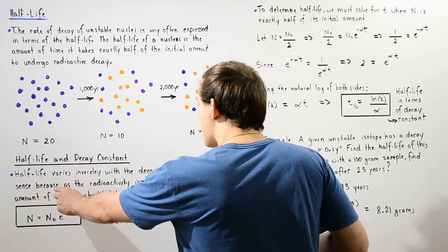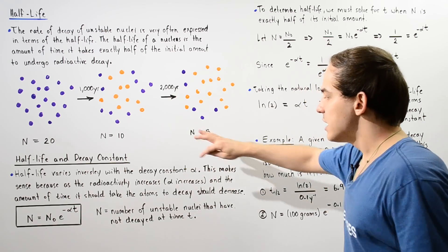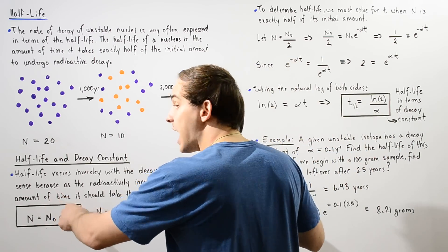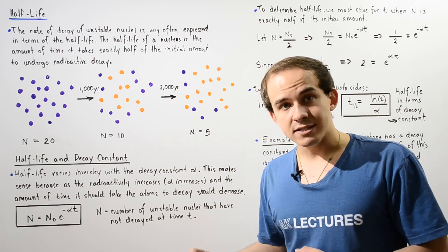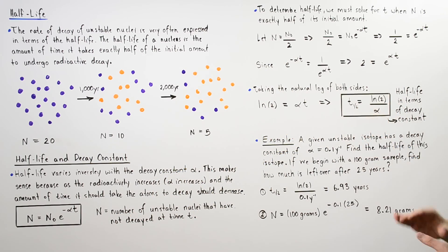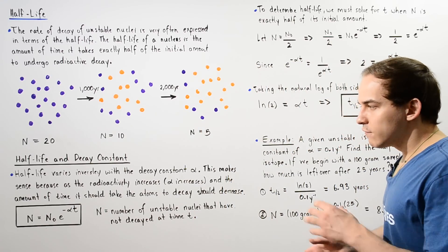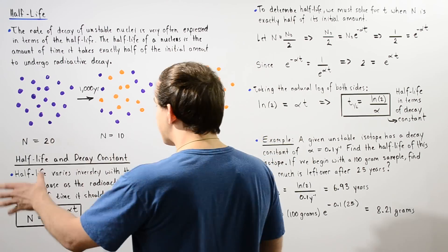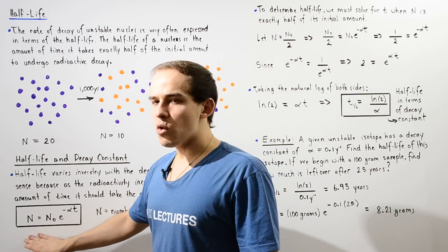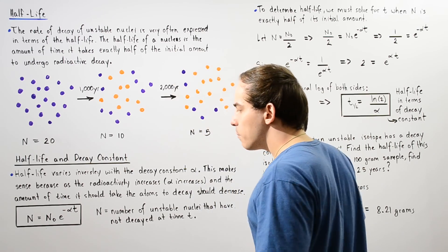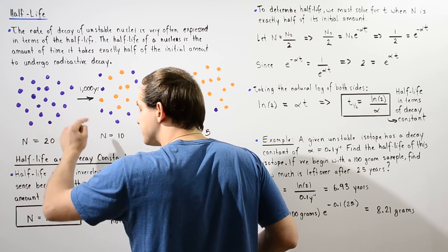This makes sense because as the radioactivity of our atom increases, alpha increases and the amount of time it takes for our atom to decay decreases. To derive the equation for the relationship between the half-life and the decay constant alpha, we begin with the radioactive decay law, where n represents our sample number at some time t.